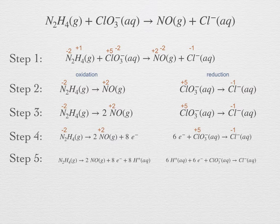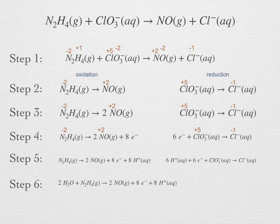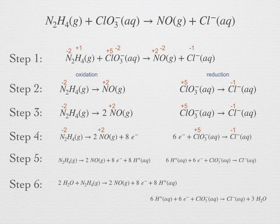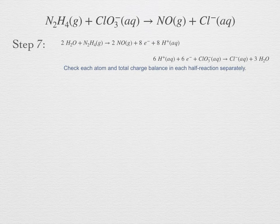Charge and change in oxidation state should now both be balanced for each half reaction separately. Step 6: balance any oxygen present by adding water as needed. The two oxygens on NO will need to be balanced by adding 2 water to the reactant side of the oxidation half reaction. Similarly, add 3 water to the product side of the reduction equation because of the oxygens in chlorate. Now check that each half reaction is separately in balance with respect to each atom and overall charge. The last step should not only have balanced the oxygen — the hydrogen should now also be in balance.